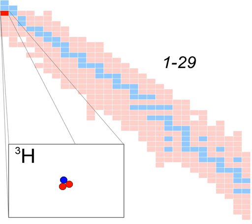The same is true, albeit to a lesser extent, of deuterium. This is why brown dwarfs, so-called failed stars, cannot utilize ordinary hydrogen, but they do fuse the small minority of deuterium nuclei.